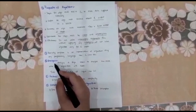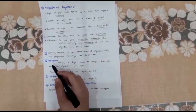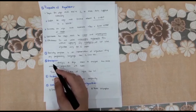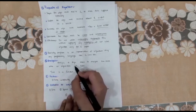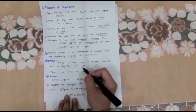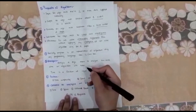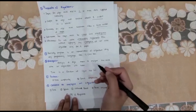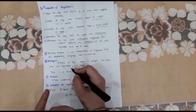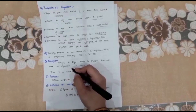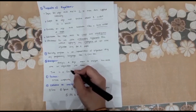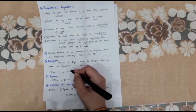Now we will talk about analysis. Analysis of Algorithm means to analyze how much time an algorithm will take. In simple words, we analyze the algorithm to check how much time it will take. For example, to solve any problem, one algorithm may take N² time, another may take N time, and another may take constant time.